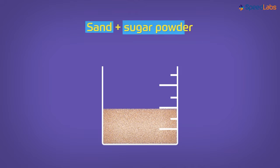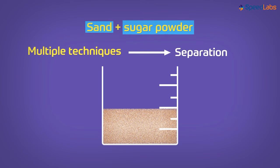A mixture of sand and sugar powder is very difficult to separate. Yes, I said difficult but not impossible. Because if many techniques and multiple steps are employed, then the separation is definitely possible. Let us see what can be done.